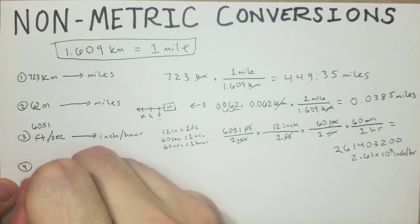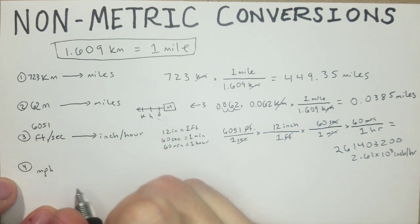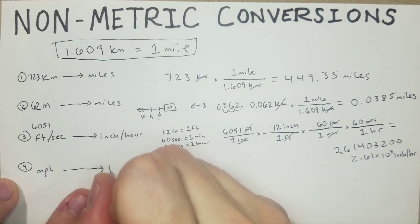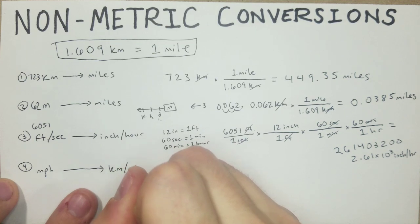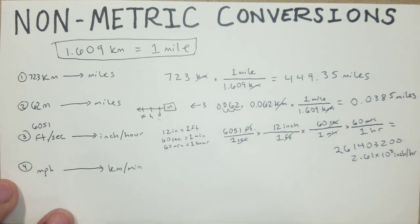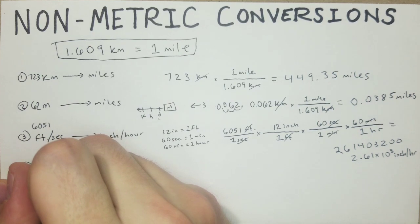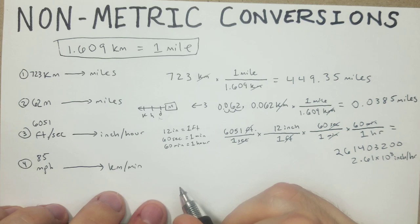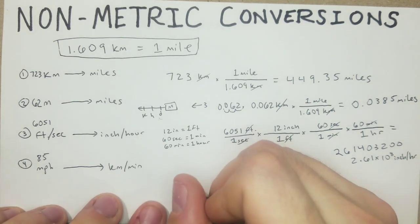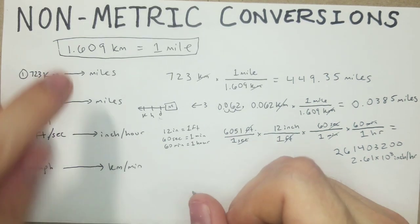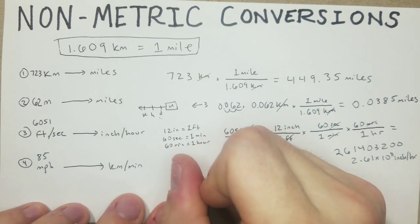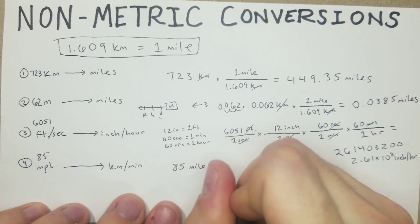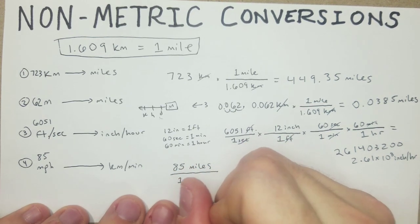Now we're going to go maybe the most complex one, but probably the most commonly asked that I've seen: miles per hour to kilometers per minute. Let's say we have 85 miles per hour to kilometers per minute. So this time we're going to obviously be reliant on this. We can just jump right in and start with what we have: miles per one hour.